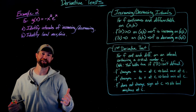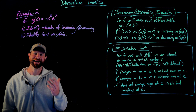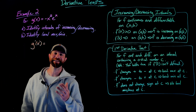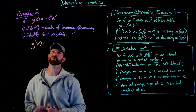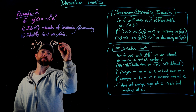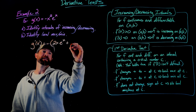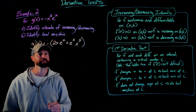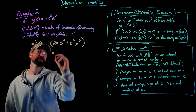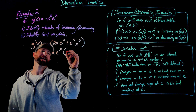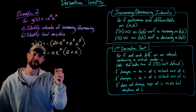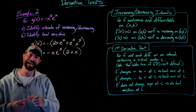For our second example, we'll tackle something that's not strictly a polynomial. We're again asked to identify the intervals of increasing or decreasing and identify the local max and mins. To take the first derivative of g(x), we're going to use the product rule. I'll leave the negative out front, take the derivative of x squared — which is 2x — multiply that by e to the x, then take the derivative of e to the x and multiply that by x squared. Next, I'll factor out as much as I can: factoring out a negative, an x from each term, and e to the x, leaving me with 2 plus x. I'm factoring after differentiating to make finding zeros and working with the sign chart easier.